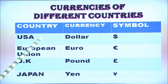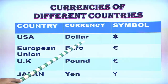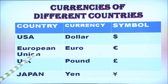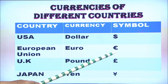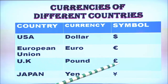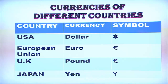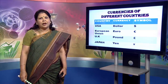Here are some countries with their currencies and symbols. The United States of America has the dollar, with the symbol of an 'S' vertically cut. The European Union has the euro, with a symbol like an 'E' with a double horizontal cut. The United Kingdom has the pound, symbolized by an 'L' cut horizontally in the middle. Japan has the yen, symbolized by a 'Y' cut horizontally in the middle.